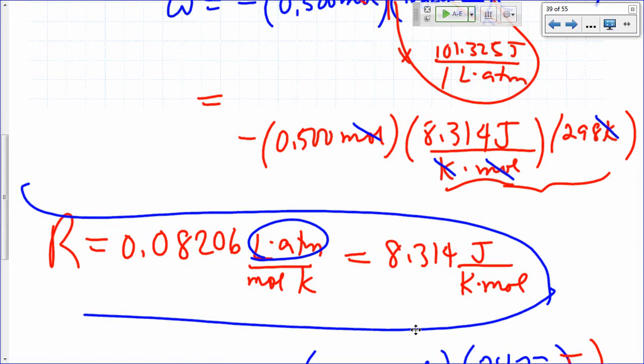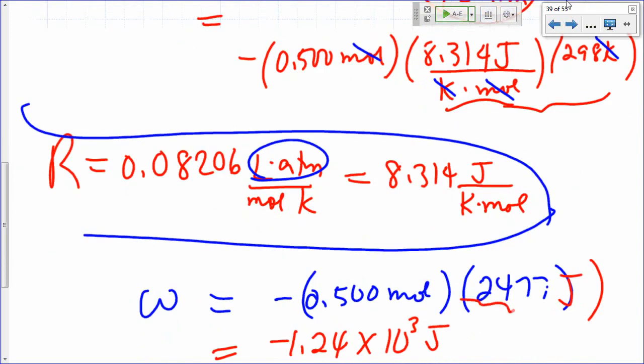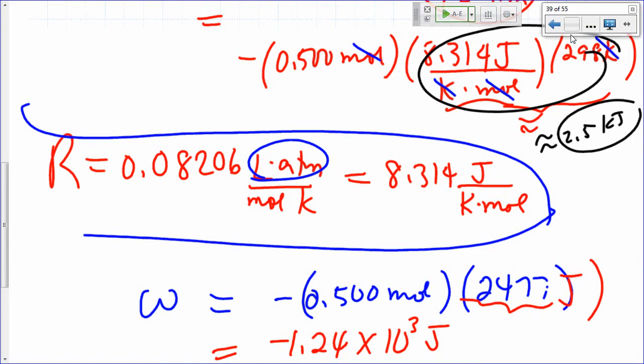So it's a good thing to remember that a ballpark figure for that is what? What's a ballpark figure for RT at room temperature? 2,477. That's about 2,500 joules. So that's 2.5 kilojoules. So this is approximately, right here, this is approximately 2.5 kilojoules. That's a good number to remember. That's 2.5 kilojoules per mole. You're going to encounter that a lot, so if you want to be able to quickly ballpark a number, think of that as an estimate.